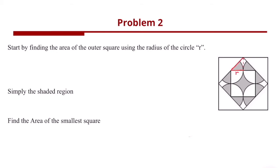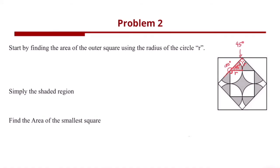Using the half-length of the smallest square, we can find the half-length of the second largest square using the Pythagorean theorem. We make a triangle where both legs equal r. Since this line is 180 degrees and the corner angle is 45 degrees, the top angle is also 45 degrees. This is an isosceles triangle, so both the horizontal and vertical lengths equal r.